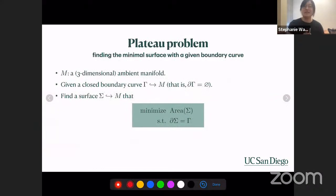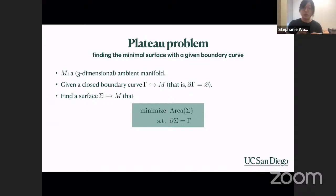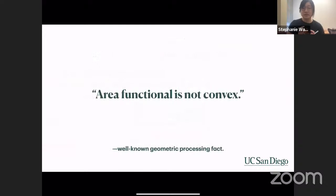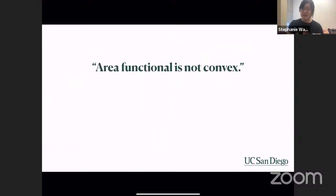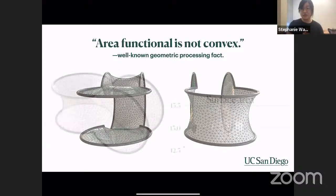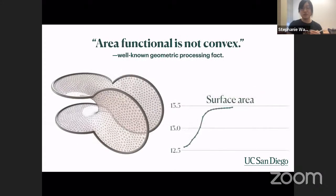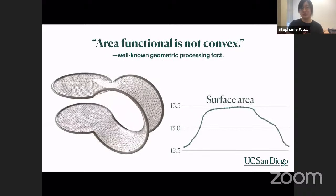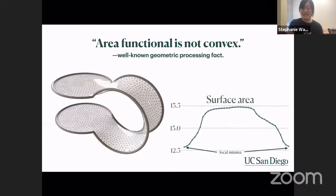To formalize: we have an ambient manifold M, we are given a closed boundary curve gamma, and we want to find a surface sigma that minimizes surface area while its boundary is specified by gamma. A well-known fact in geometric processing is that the area functional is not convex. Given an identical boundary wire, I can find two local minima — if you try to deform the mesh from one to the other, the surface area increases then decreases. This behavior of having two local minima shows the functional is not convex. So how do we solve this problem? We look at surface representations, which can be roughly divided into implicit and explicit types.